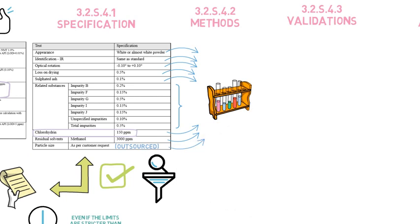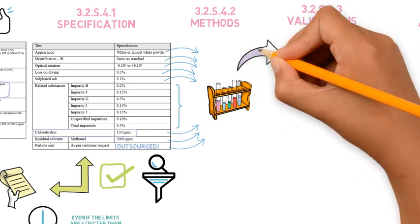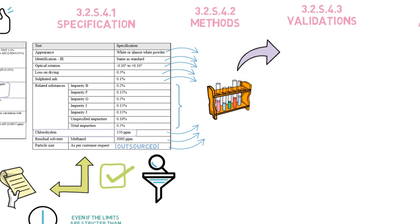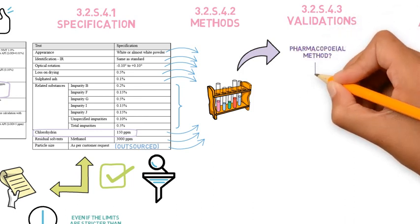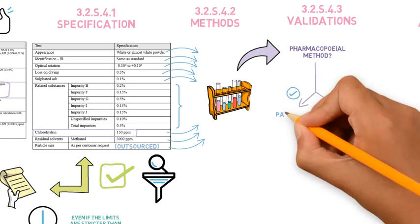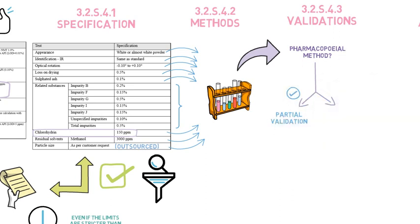Analytical methods need to be validated, and the analytical validation will be provided next. For pharmacopoeia APIs, if the method is exactly as described in the monograph, the validation may be only partial.